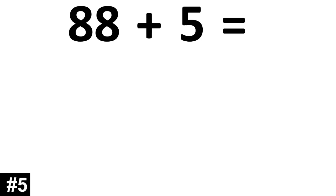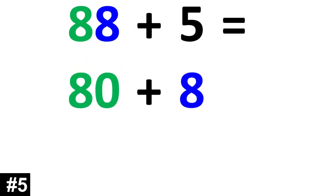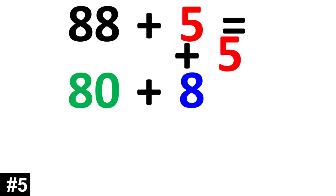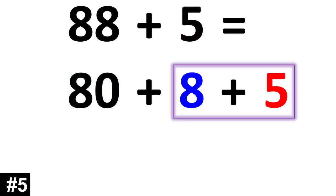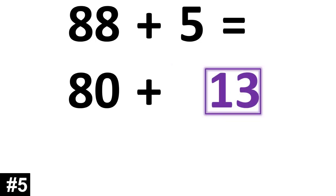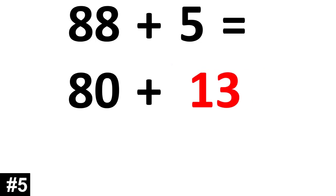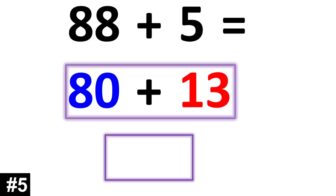88 plus 5. 88 is the same thing as 80 plus 8. So now we add the 5 and we say 8 plus 5, which gives us 13. And then we can mentally add 80 plus 13, which gives us 93.